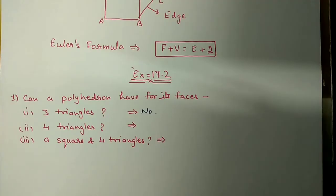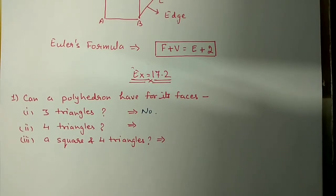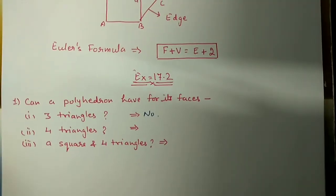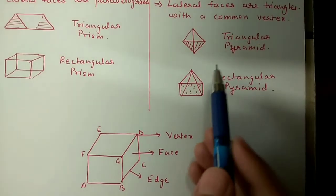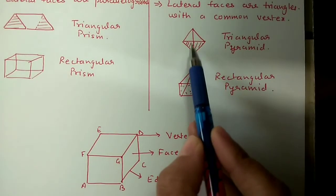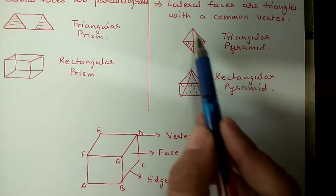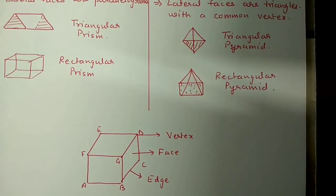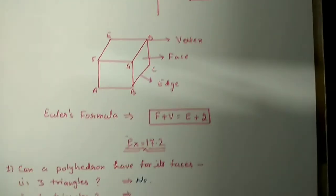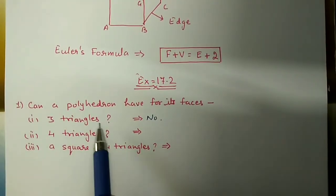Now we will start exercise 17.2. Question number 1: Can a polyhedron have its faces as three triangles? We have to check whether with the help of three triangles we can make a solid figure or not. It is not possible - with the help of three triangles we cannot make a solid figure. We need minimum four triangles for a triangular pyramid.